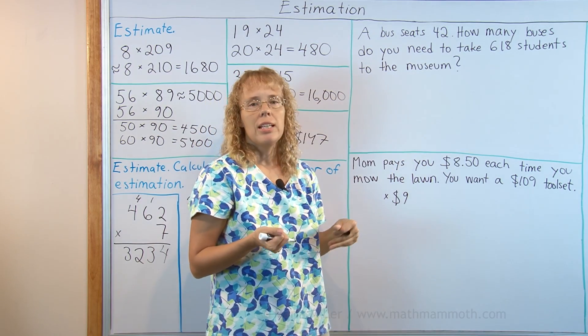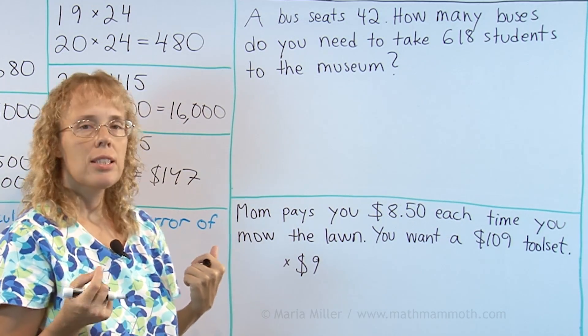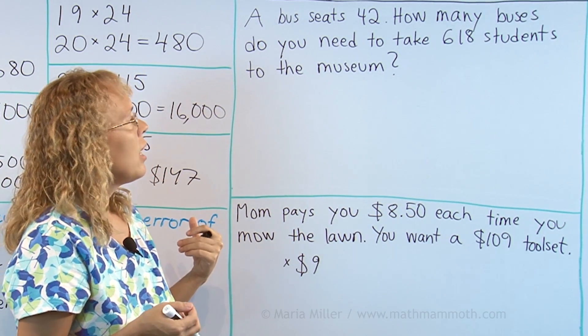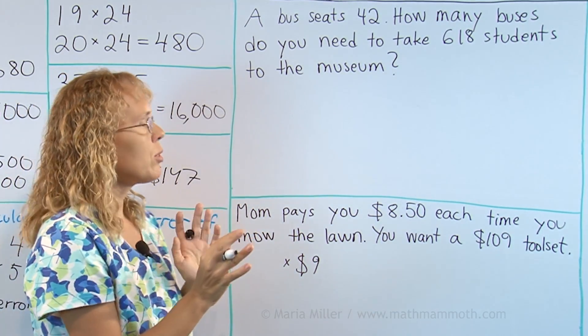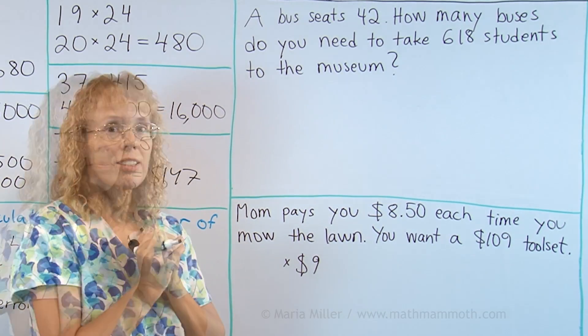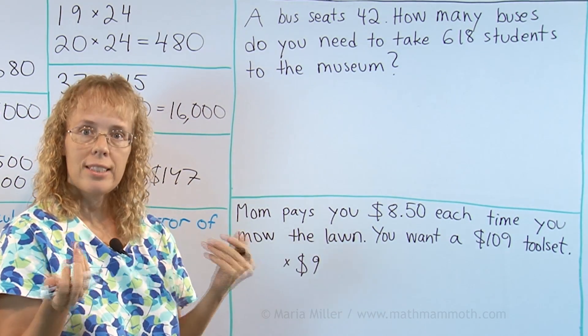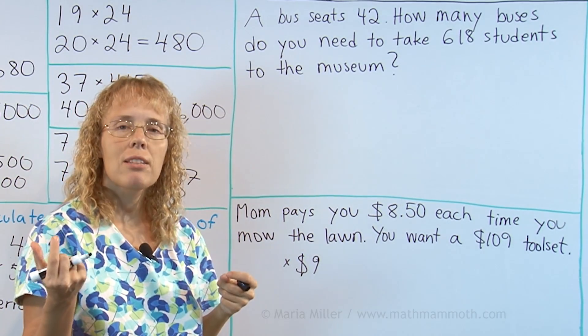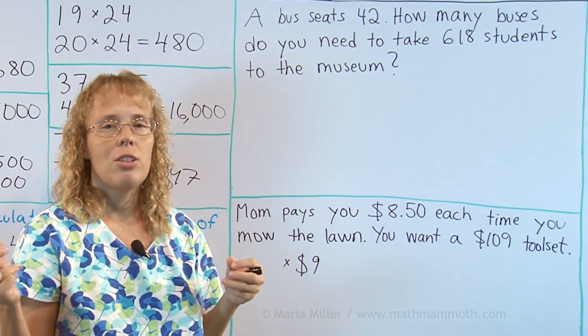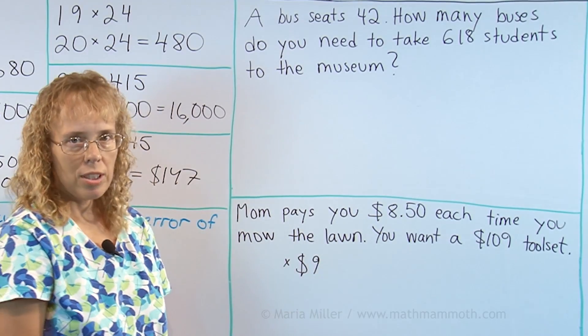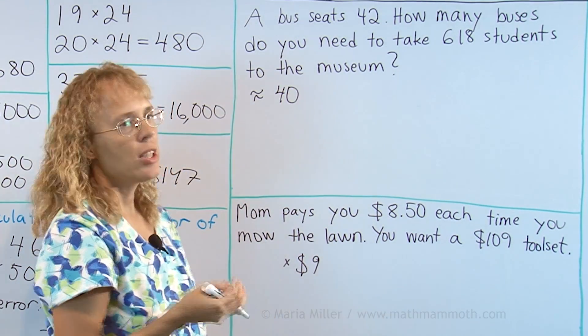This problem if you read it and think about it is essentially a division problem. A bus seats 42 people and then how many buses would you need to take 618 students someplace to the museum? And we can find the answer by dividing 618 divided by 42. But that looks and sounds like a difficult division right? But we don't have to divide. We can use multiplication instead. And we can also use estimation to solve it because we don't need to know what would be the exact result. I just need how many buses. Let me use rounding numbers when we are estimating.